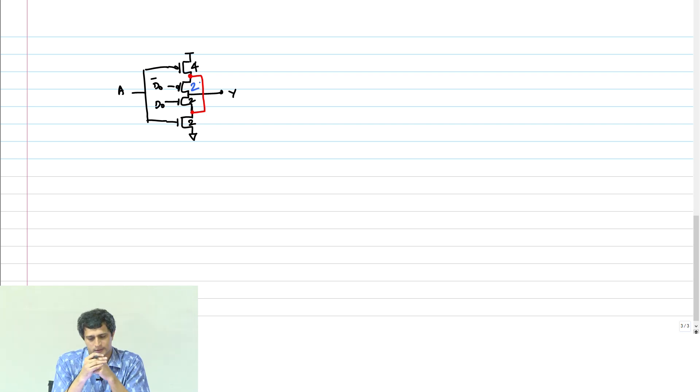It turns out that you really do not need to make this parallel connection. I can still get a very valid gate that does exactly the same functionality even if I remove this parallel connection here. If I redraw that circuit, it is going to look like this.